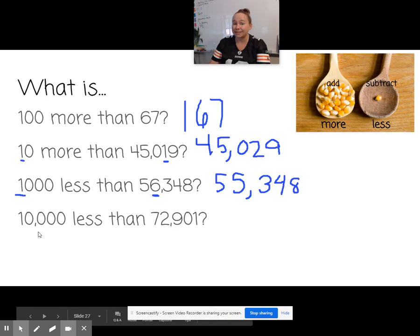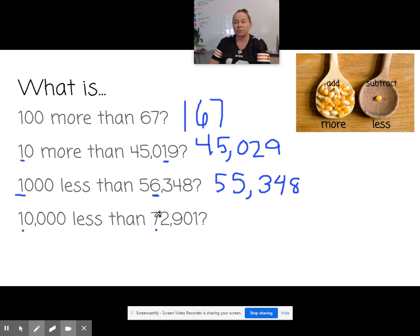10,000 less, less means we're subtracting, than 72,901. So we're in the 10,000s place, which is right here. So I'm going to take 1 away from my 10,000s place. And that leaves me with 62,901. Let's try another one.